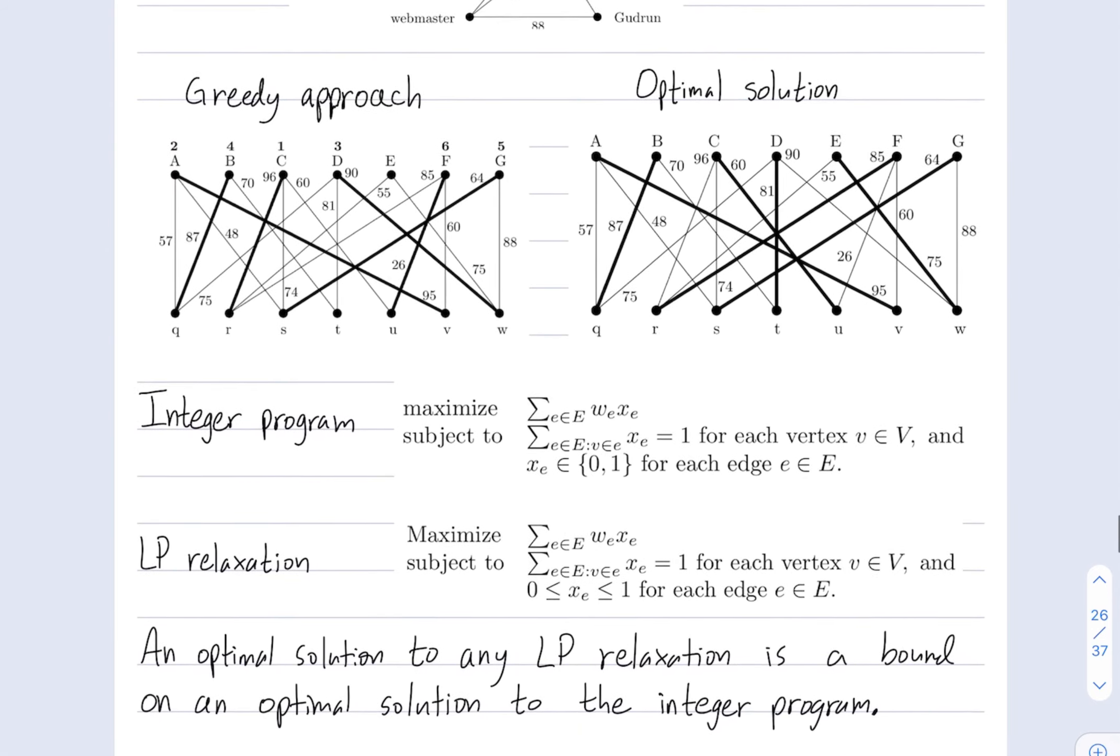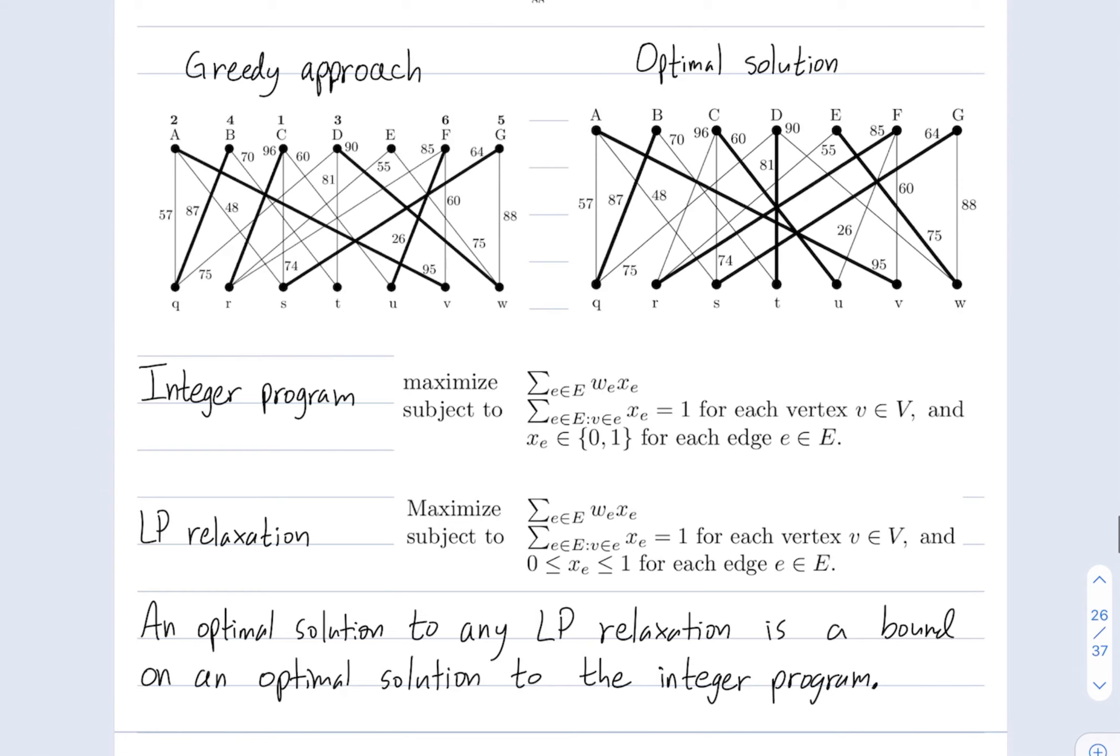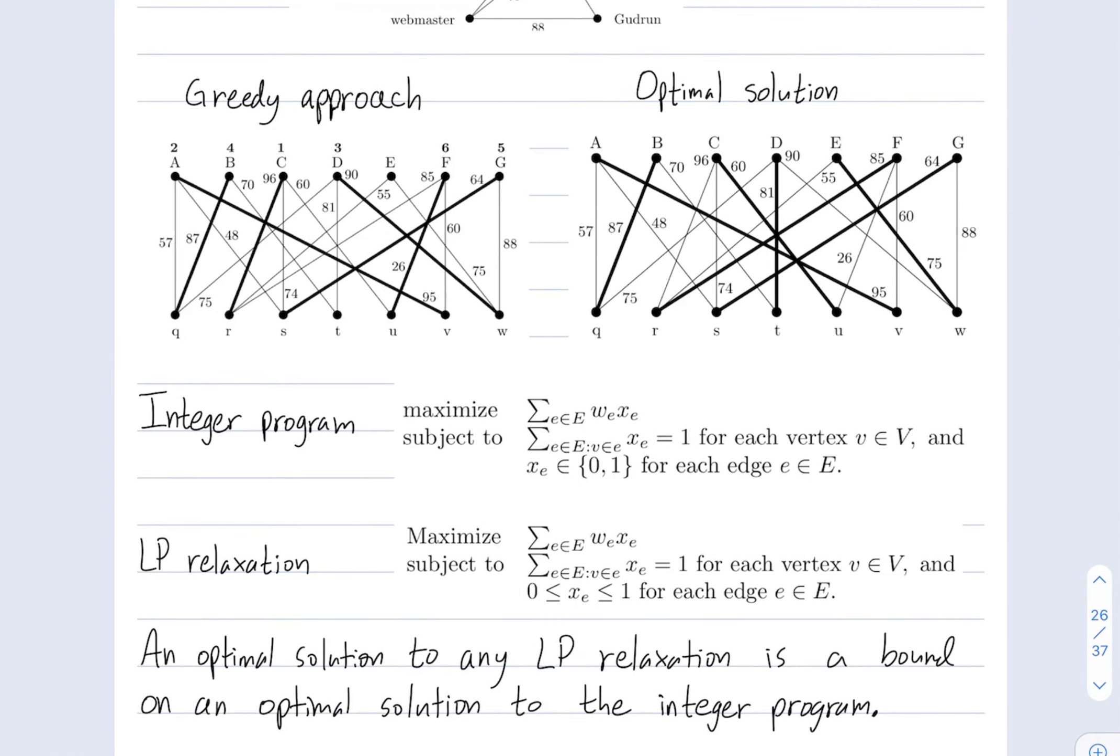Wonderful. Let me describe how to solve this as an integer program. So, our graph G has a vertex set, capital V, and an edge set, capital E. Each edge has an associated weight. So, W sub E is the weight of edge E. For example, this edge has weight 87.